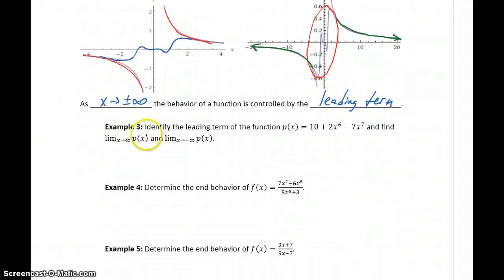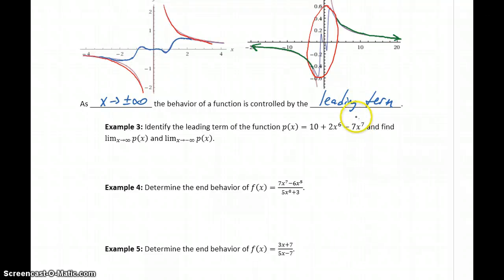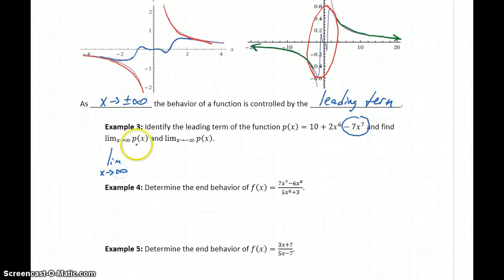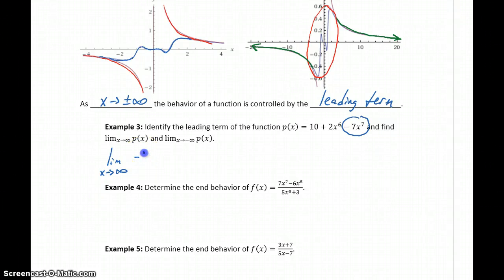In Example 3, we identify the leading term for this function and find the limit as x goes to both infinity and negative infinity. The leading term is always the term with the highest power. In this case, negative 7x to the 7th is our leading term. So if we want to take the limit as x goes to infinity of p(x), we really only have to consider the leading term, because it changes so much faster than the other terms.